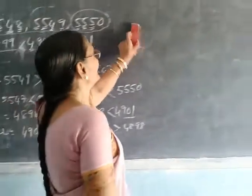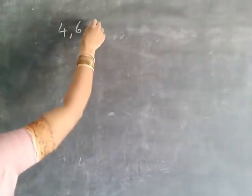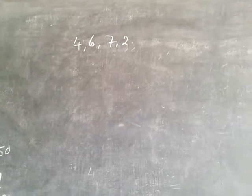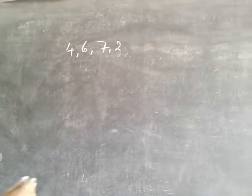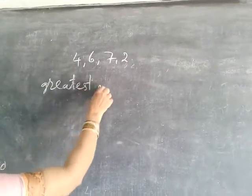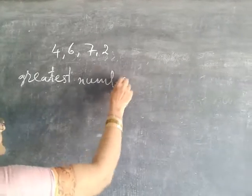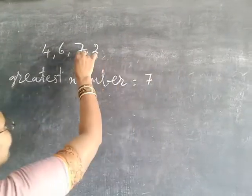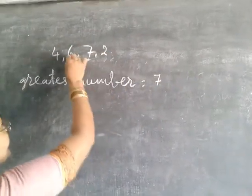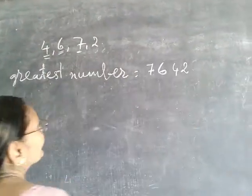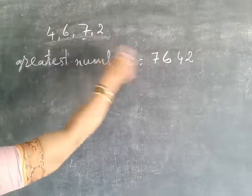Next, suppose any four digits are given — you have to write the greatest number and smallest number using those four digits. For the greatest number, first you write the greatest digit. First, seven is the greatest out of these four, next greatest is six, next greatest is four, and the last must be two. So seven thousand six hundred and forty-two is the greatest number. Whatever digits are given, you use them and write the greatest number.